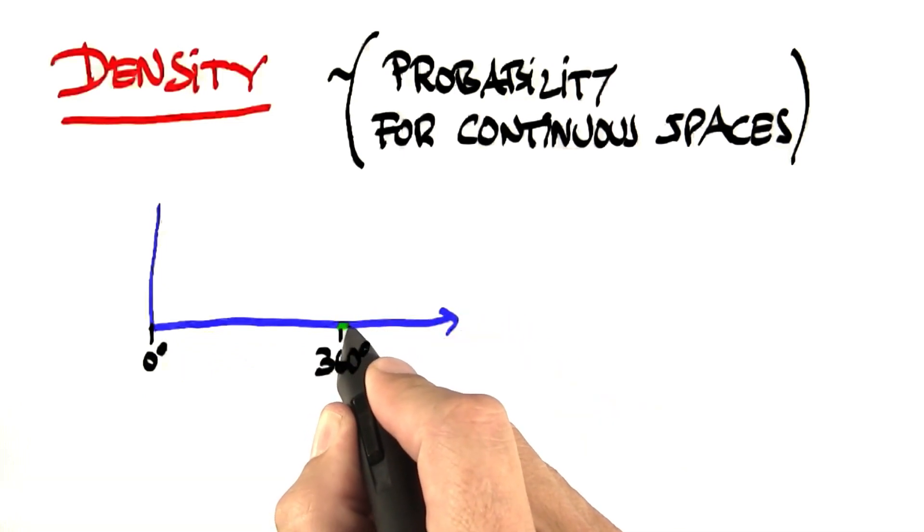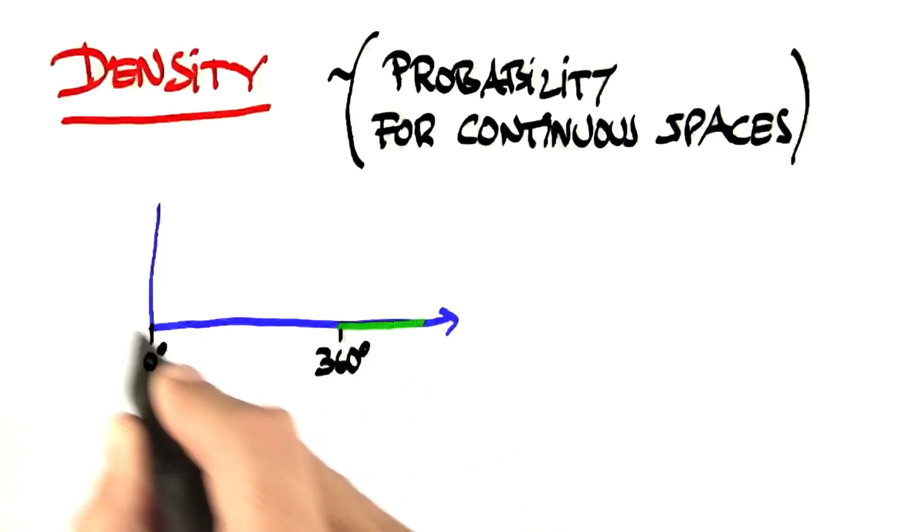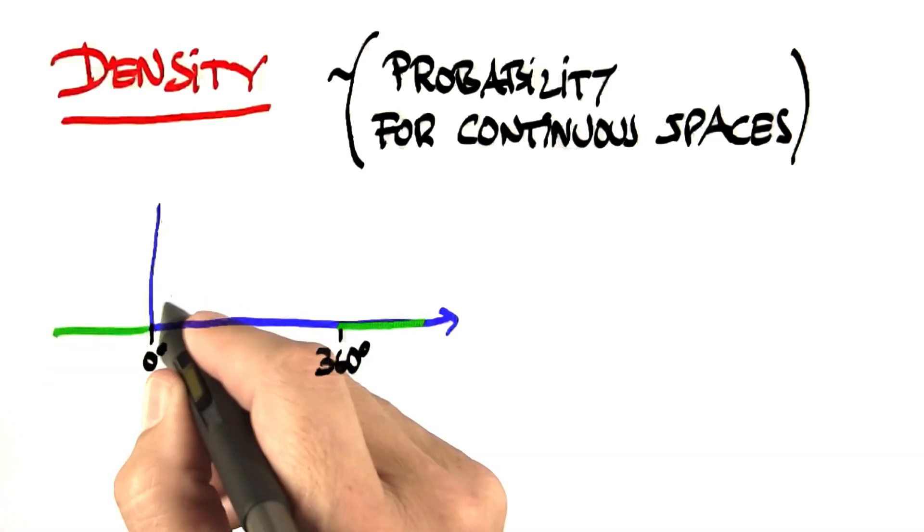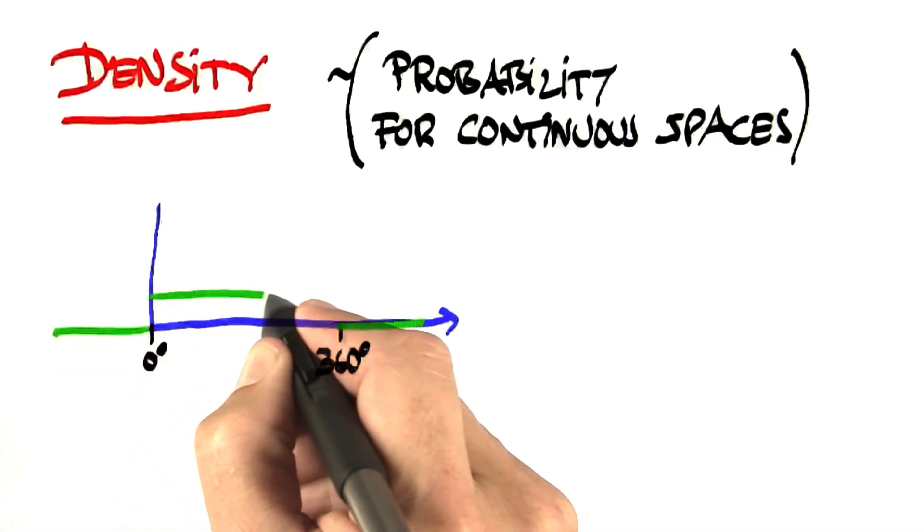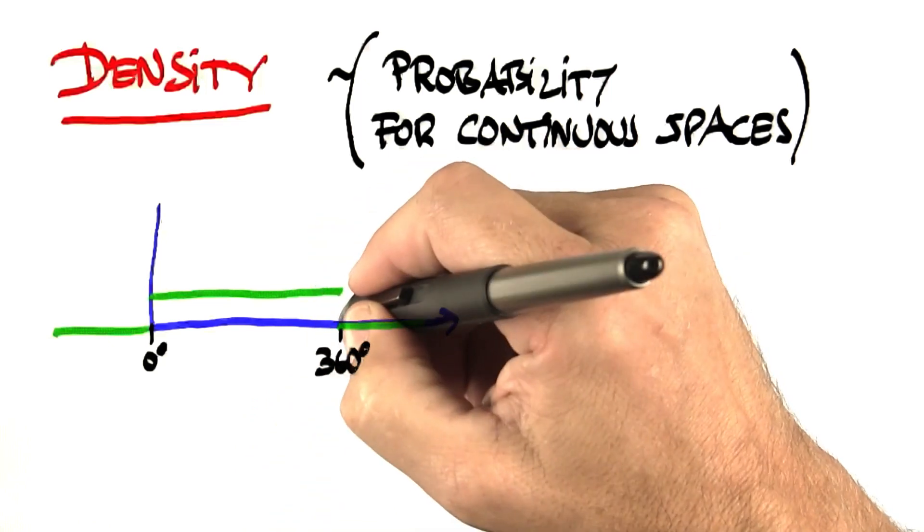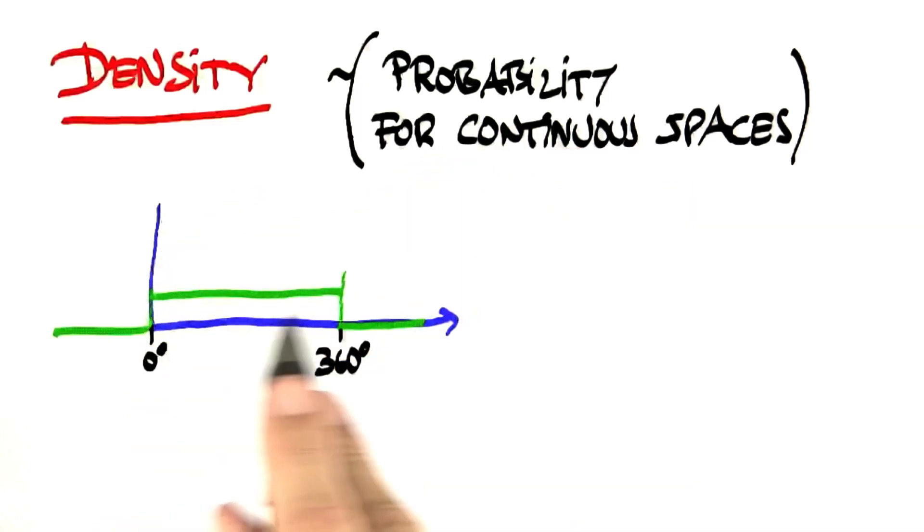So given what we learned, we want to assign 0 to anything outside that range, but inside this range, we'd love to give a value and say there's a function here that renders every outcome in this interval equally likely.